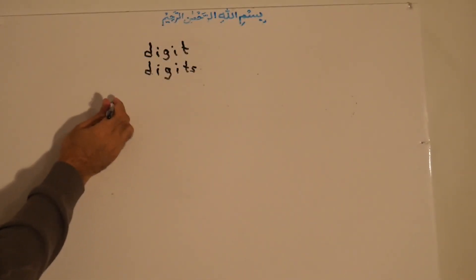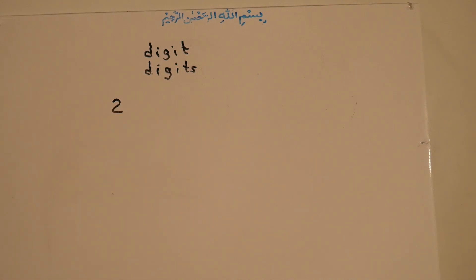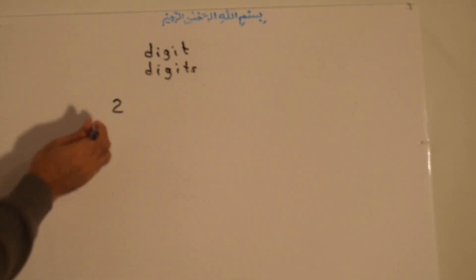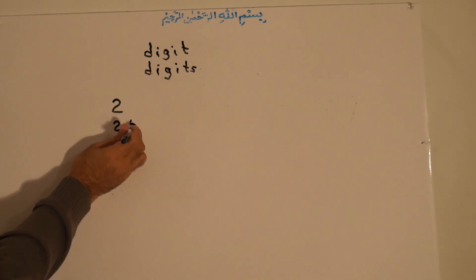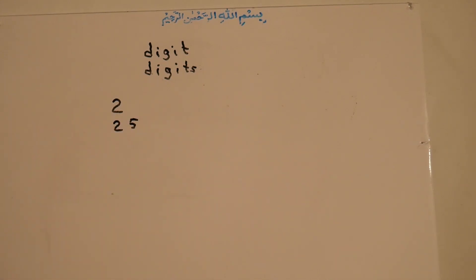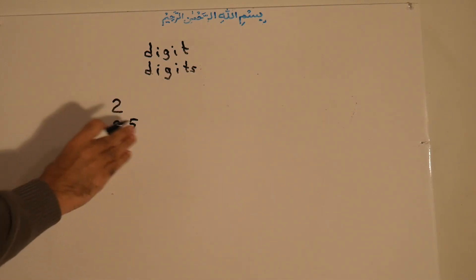For example, the number two is a digit — a one-digit number. Now, if you make 25, this is two digits: one digit and two digits. Two digits means the number has two places.